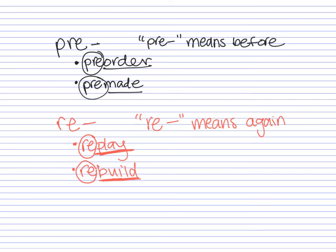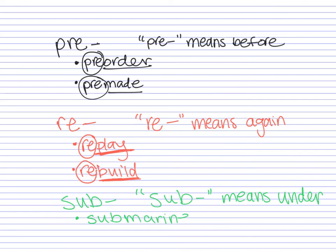Our last prefix for today is 'sub.' Sub, when used as a prefix, means under. For example, the word 'submarine.' A submarine is a boat underwater. 'Marine' refers to a vessel on the water, and 'sub' means under — so that gives us a boat underwater. Hence the word submarine, with the prefix 'sub' meaning under.